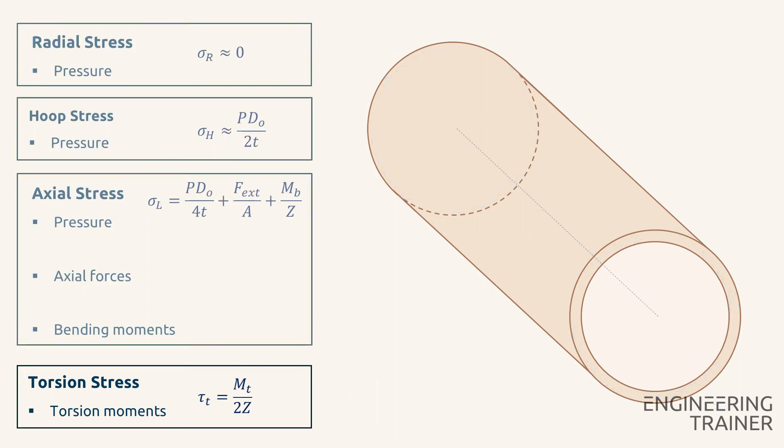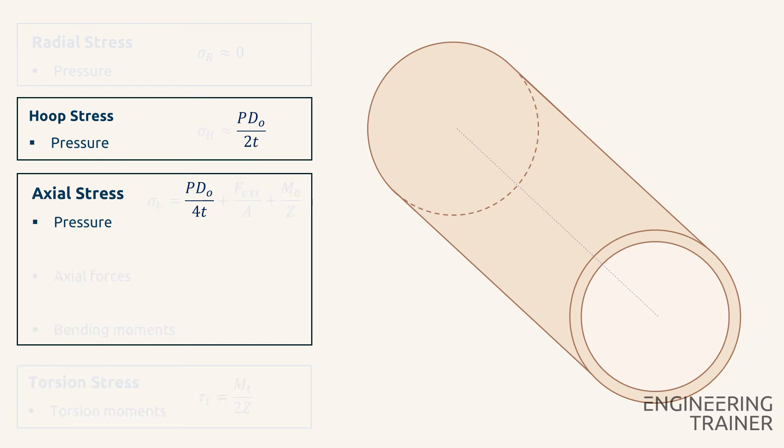We now have an overview of all relevant stresses in piping. But we'll leave out the radial stress as this can be neglected for thin-walled piping. We can categorize the loads that cause these stresses as loads that are independent of the pipe routing in a system, which is only the pressure,